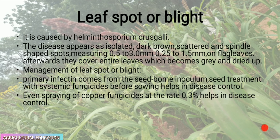Leaf spot or blight is caused by Helminthosporium crus-galli. The disease appears as isolated dark brown, scattered, spindle-shaped spots measuring 0.5 to 3 mm × 0.25 to 1.5 mm on flag leaves; afterwards they cover entire leaves, which become gray and dry up. Management: primary infection comes from seed-borne inoculum. Seed treatment with a systemic fungicide before sowing helps in disease control; spraying copper fungicides at 0.3% also helps.